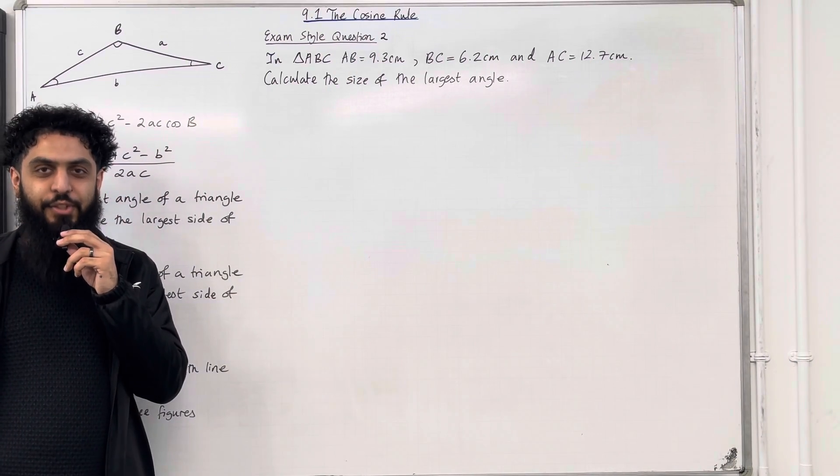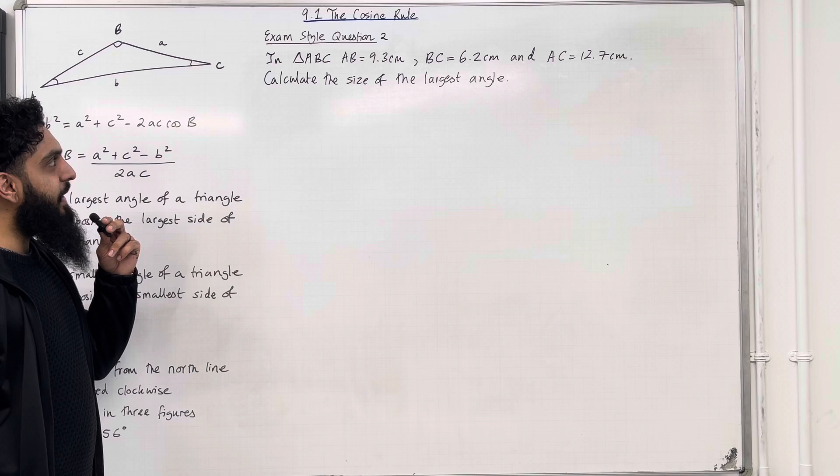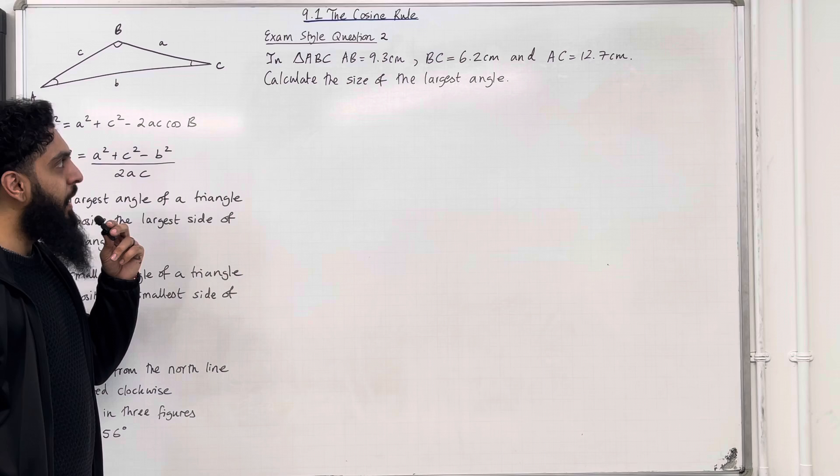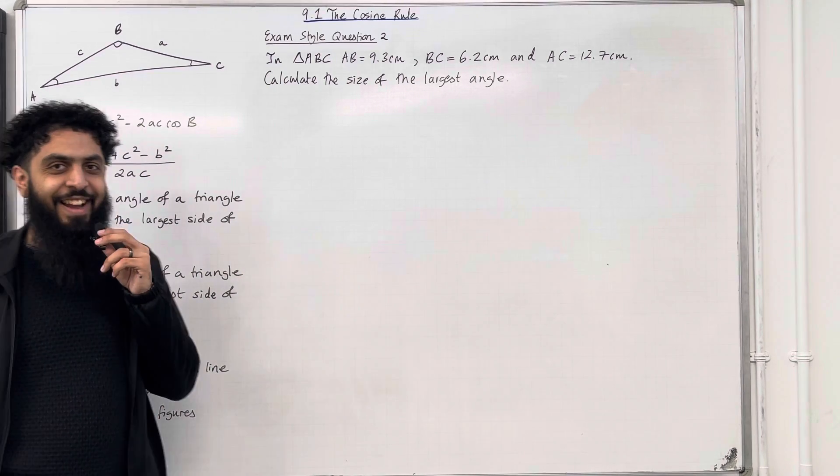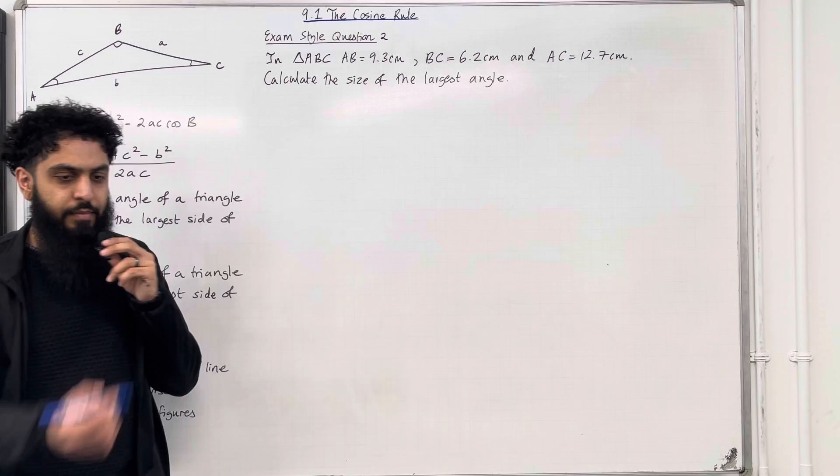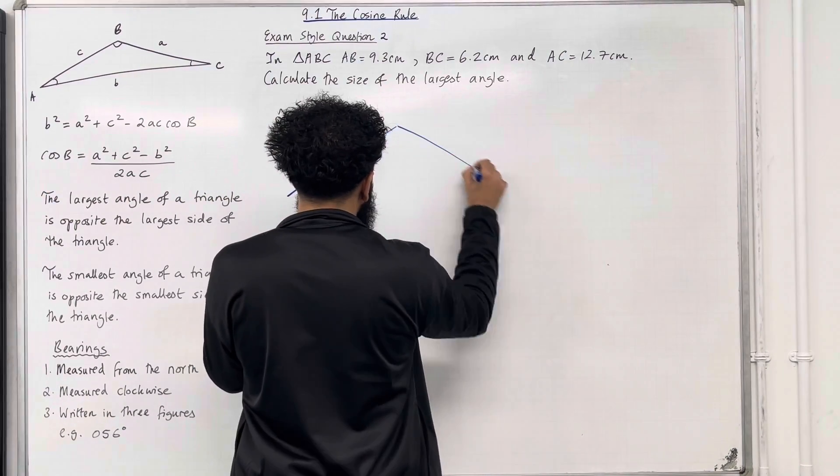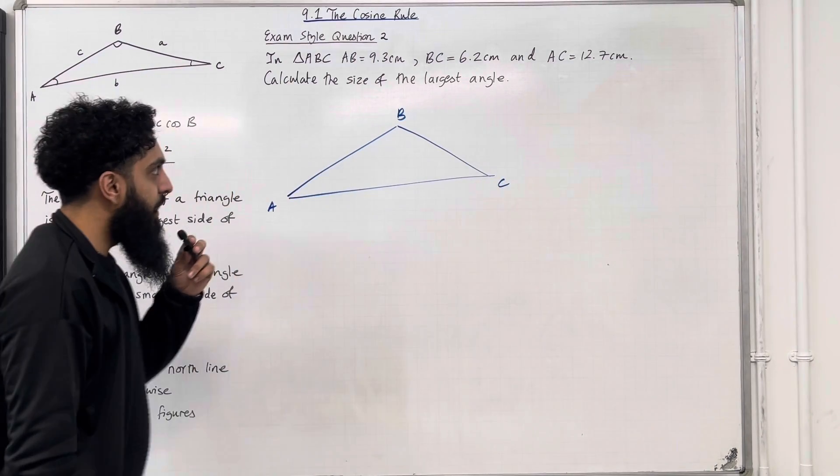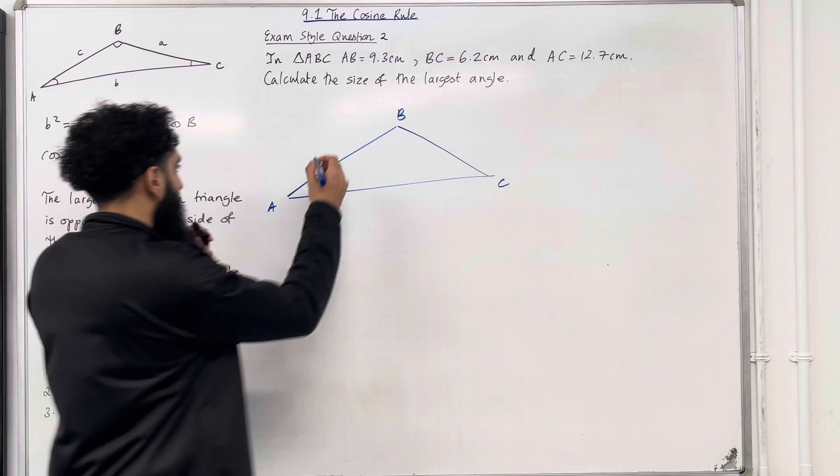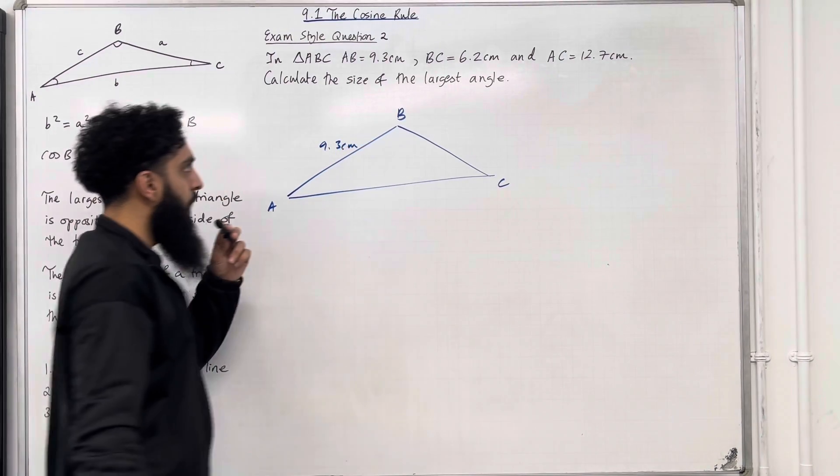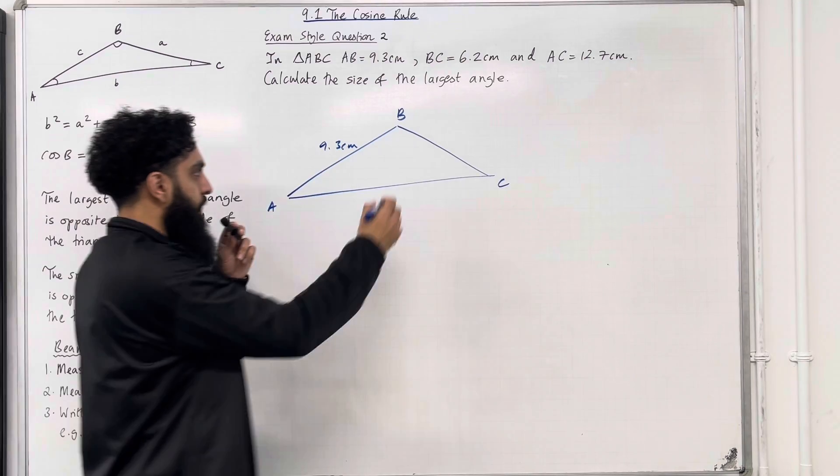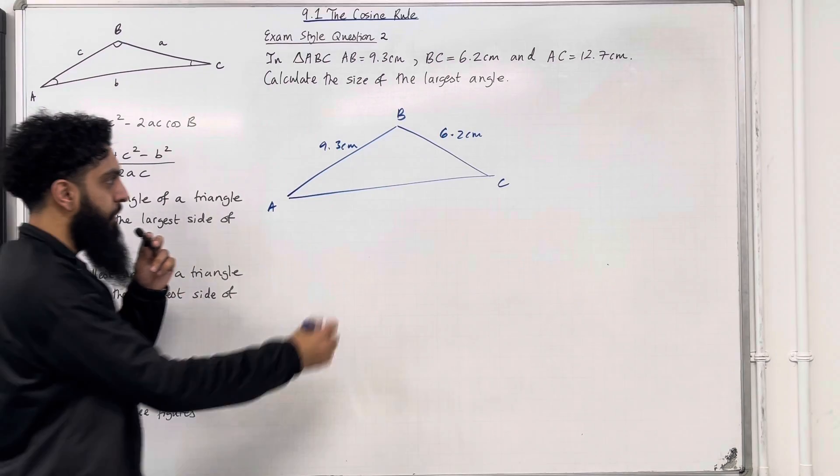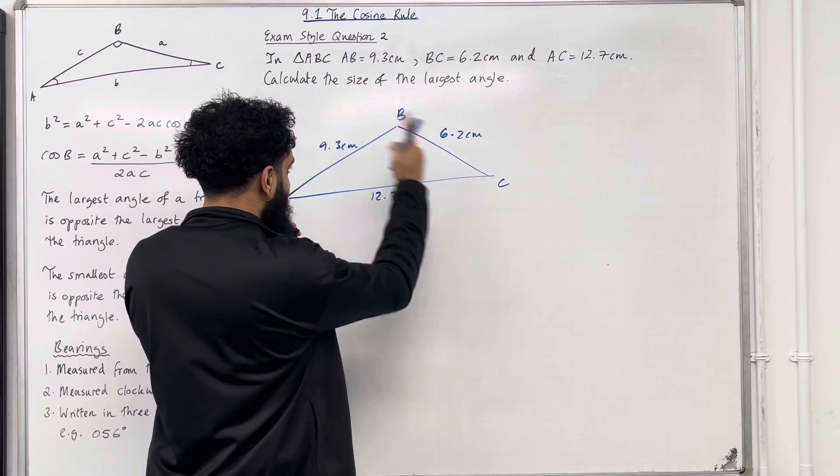Let's have a look at exam style question 2. In triangle ABC, AB equals 9.3 cm, BC equals 6.2 cm and AC equals 12.7 cm. Calculate the size of the largest angle. So I'm going to start by drawing the triangle ABC. Here is my triangle. This is capital A, this is capital B, this is capital C. The length AB is 9.3 cm, BC is 6.2 cm, and AC is 12.7 cm.